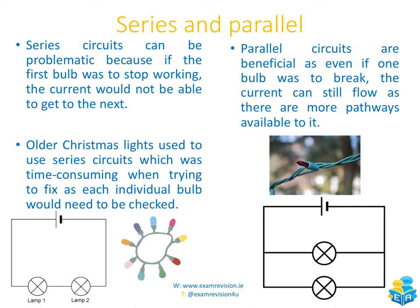You've probably seen series circuits around Christmas time — older Christmas lights used series circuits, which was problematic because if one bulb stopped working, the circuit would break and none of the subsequent bulbs would light. You'd have to check every bulb individually. That's why modern Christmas lights use parallel circuits — even if one bulb breaks, the current can still flow through the other paths and all remaining lights keep working.